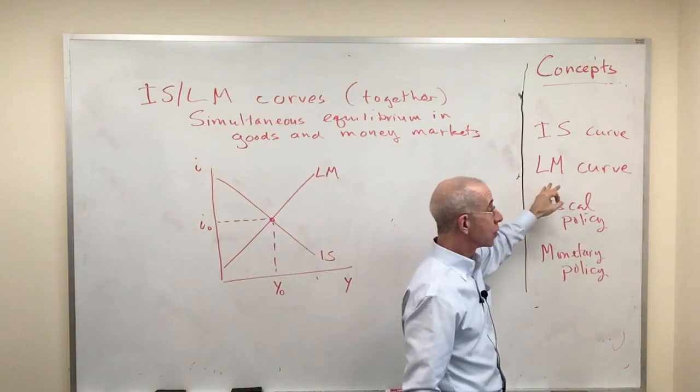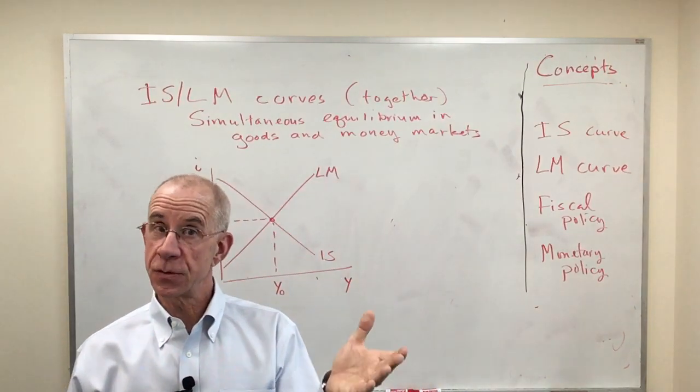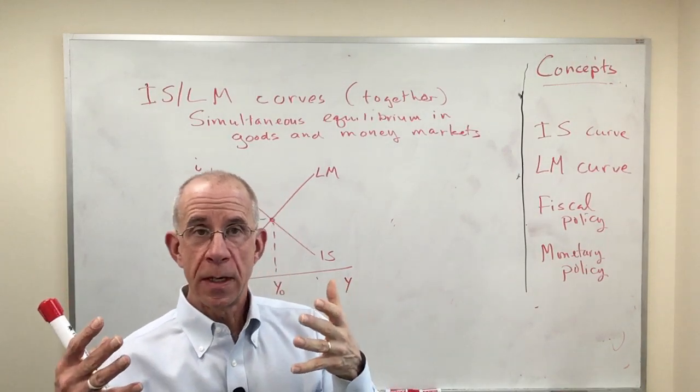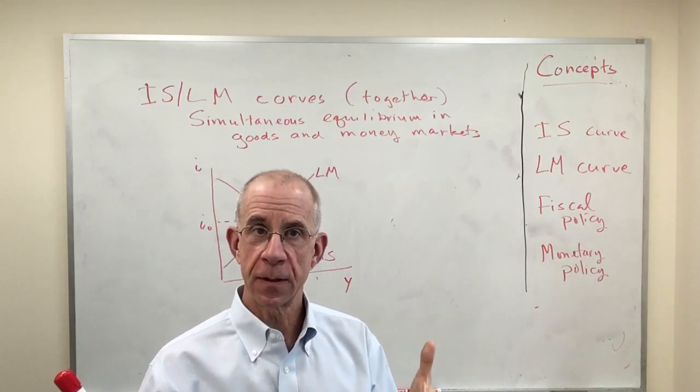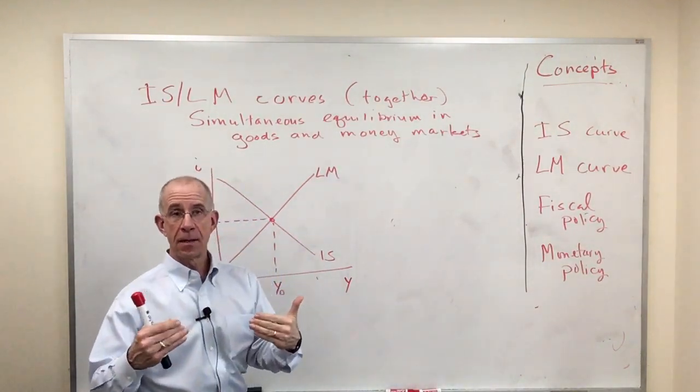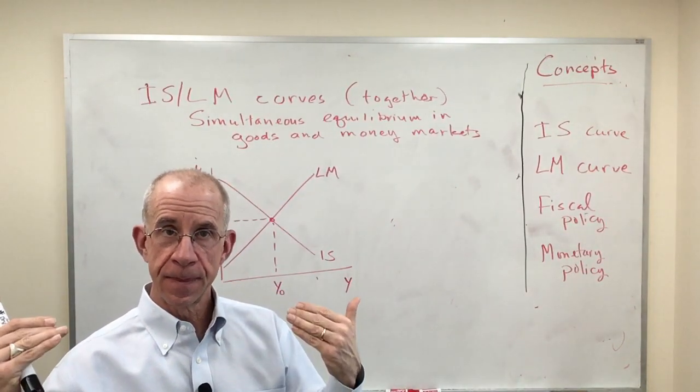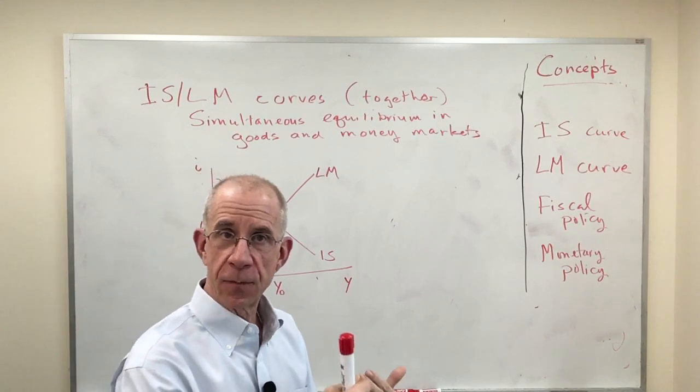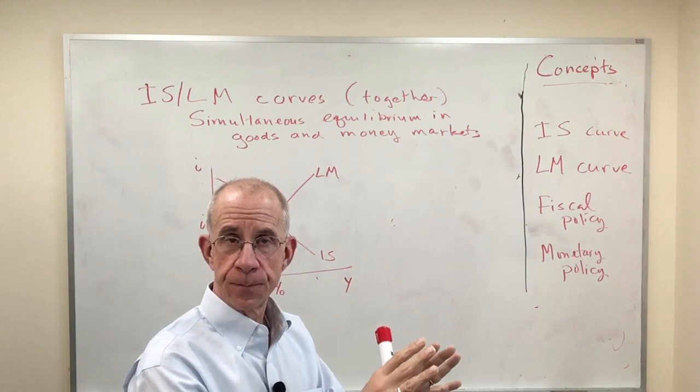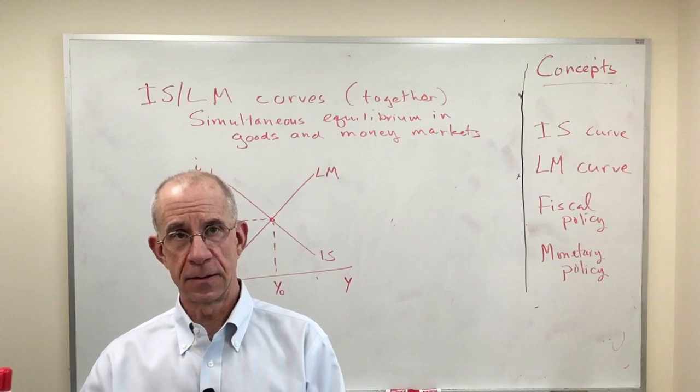The LM curve, where the demand for money equals the supply of money at different interest rates and GDP levels. When we talk about an overall equilibrium for the economy, we want to look at where both the goods market and the money market simultaneously clear, where the demand and supply of goods is equal and where the demand and supply of money is equal.